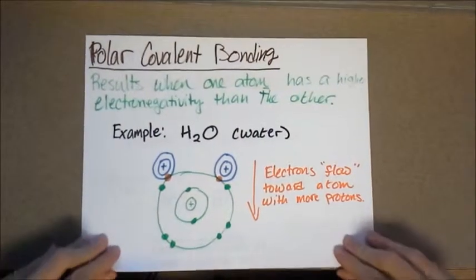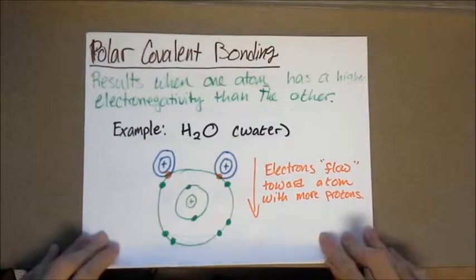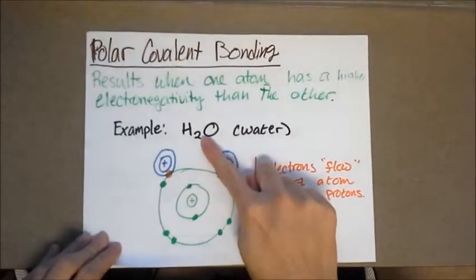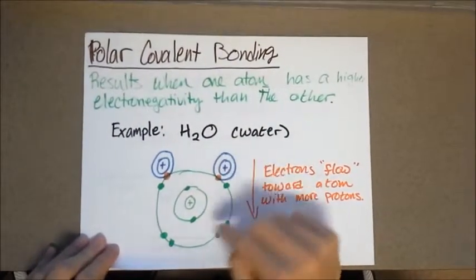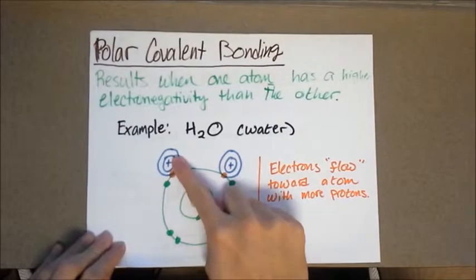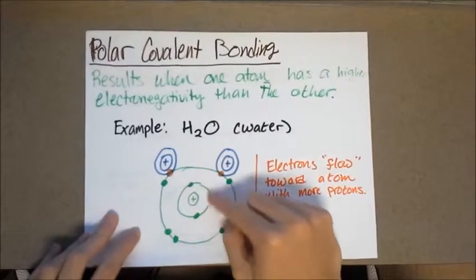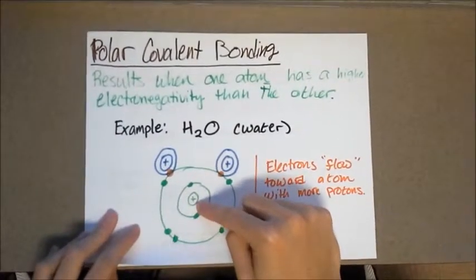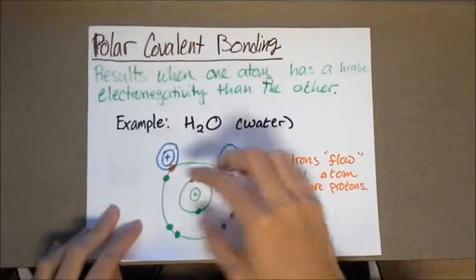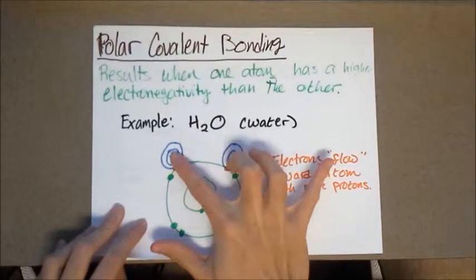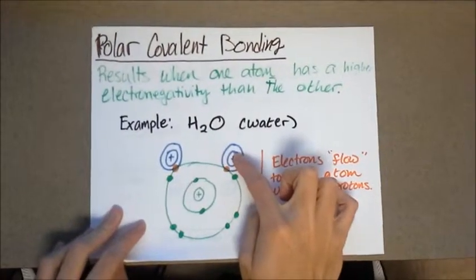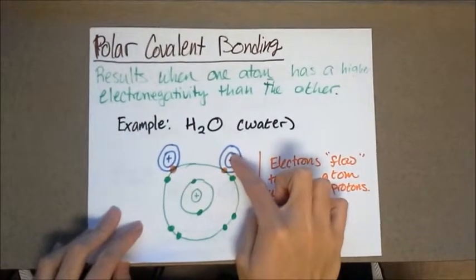Polar covalent bonding results when one atom has a higher electronegativity than the other. For example, water, H2O. The oxygen atom attracts the electrons of these two hydrogen atoms. Therefore, because oxygen has a larger nucleus and more protons, it's going to attract these electrons more strongly away from these protons, which only have a plus one charge each.